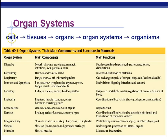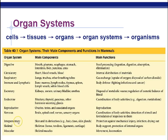Here's a complete overview of the levels of organization: cells make up tissues, tissues make up organs, organs make up organ systems, and organ systems make up the organism. The coming chapters will go into detail on each one of these.